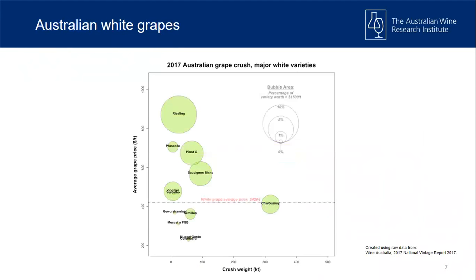The next slide is from the 2017 crush — it shows crush weight of the top twelve white varieties along the bottom and average grape price on the vertical axis. Chardonnay is quite a workhorse. Riesling is about seventh or eighth in crush weight, but in terms of average price it is the highest of that grouping. The size of the bubbles represents the percentage of fruit worth above $1,500 a tonne — the Riesling bubble is quite big, so it's a high-value premium white variety.